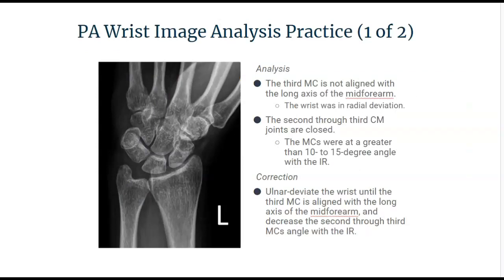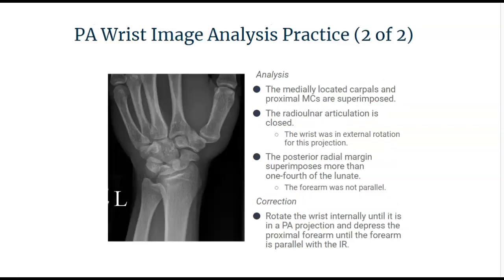In our first practice analysis, we can see that the third metacarpal is not aligned with the long axis of the mid forearm, which indicates some radial deviation. Also, the second through third carpometacarpal joints are closed, suggesting some wrist elevation. The radial-ulnar joint space is also closed. We need to ensure the wrist is in a true PA projection without any deviation or rotation.